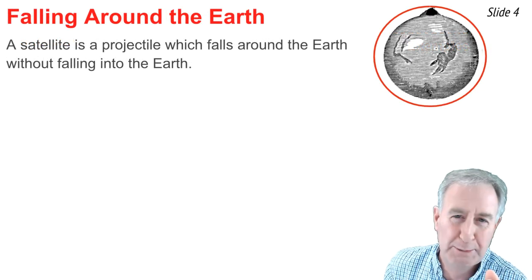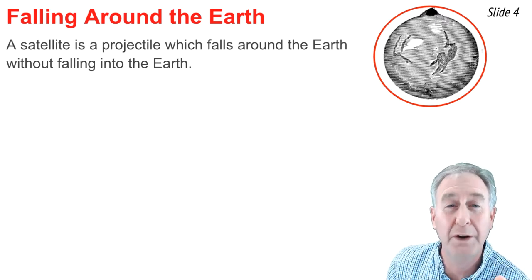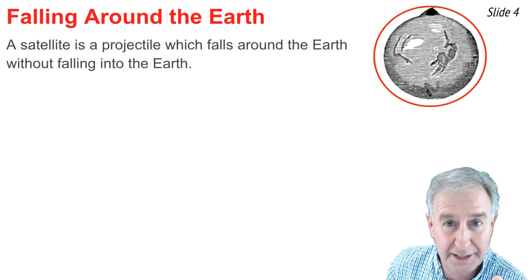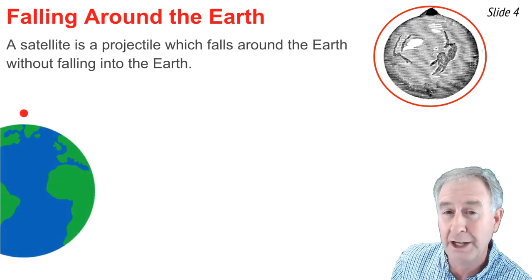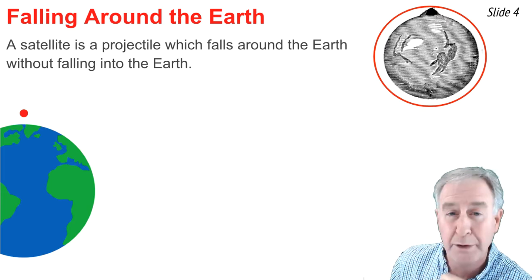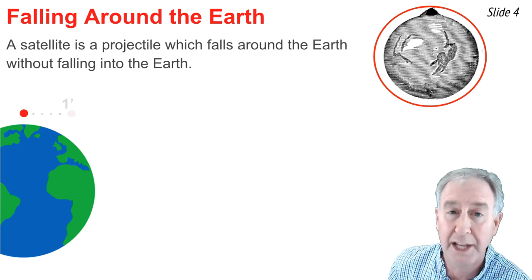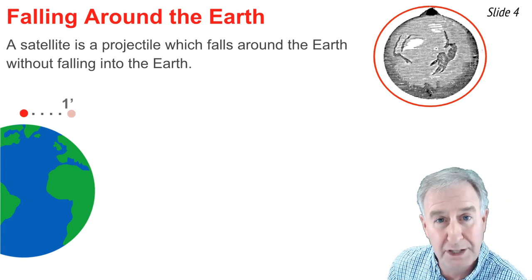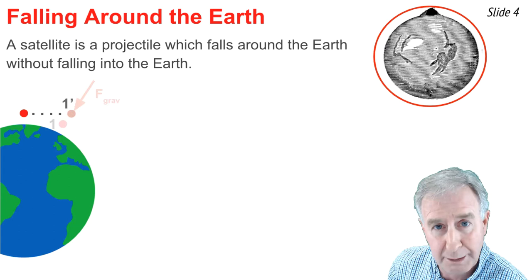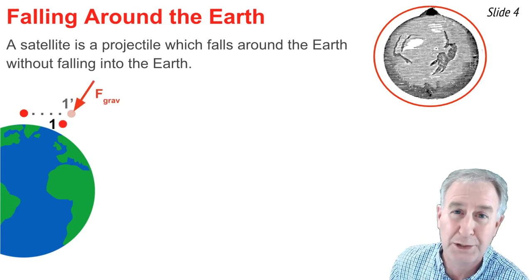Newton's Mountain Thought Experiment teaches us that a satellite is a projectile that falls around the Earth without ever falling into the Earth. To illustrate the idea, consider this projectile launched horizontally from the position of the red dot. In the absence of gravity, this projectile would travel tangent to the Earth and end up at location 1 prime. But because of the influence of gravity, pulling it downwards instead, it's at location 1 and traveling tangent to the circular path.